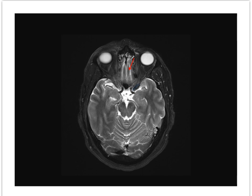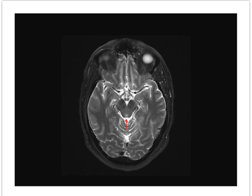Here is the gyrus rectus, beneath which lies the olfactory bulb and tract mediating smell as cranial nerve 1, just above the superior nasal cavity — a relationship better seen on the coronal. At this level we have the quadrigeminal plate cistern at the level of the inferior colliculus.